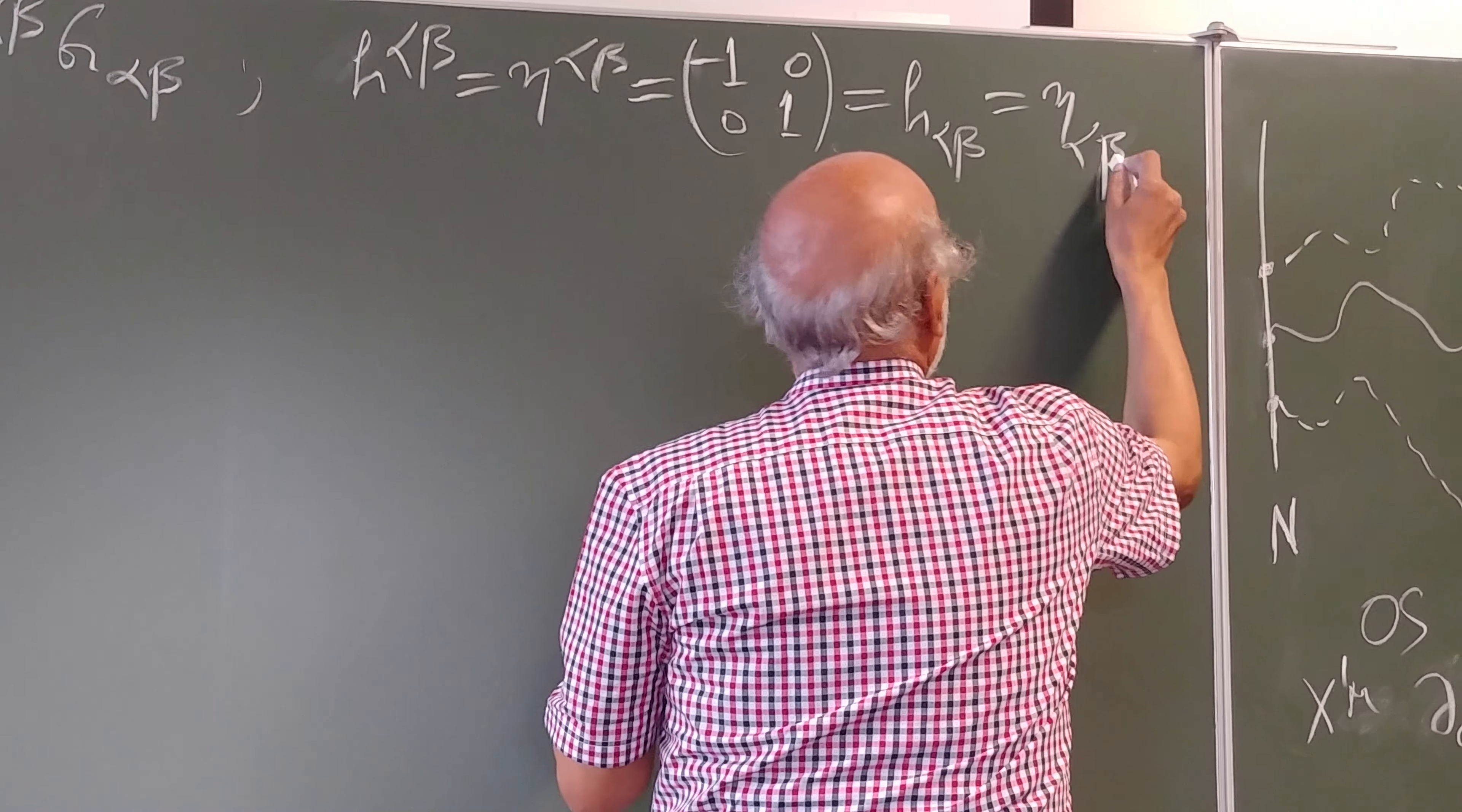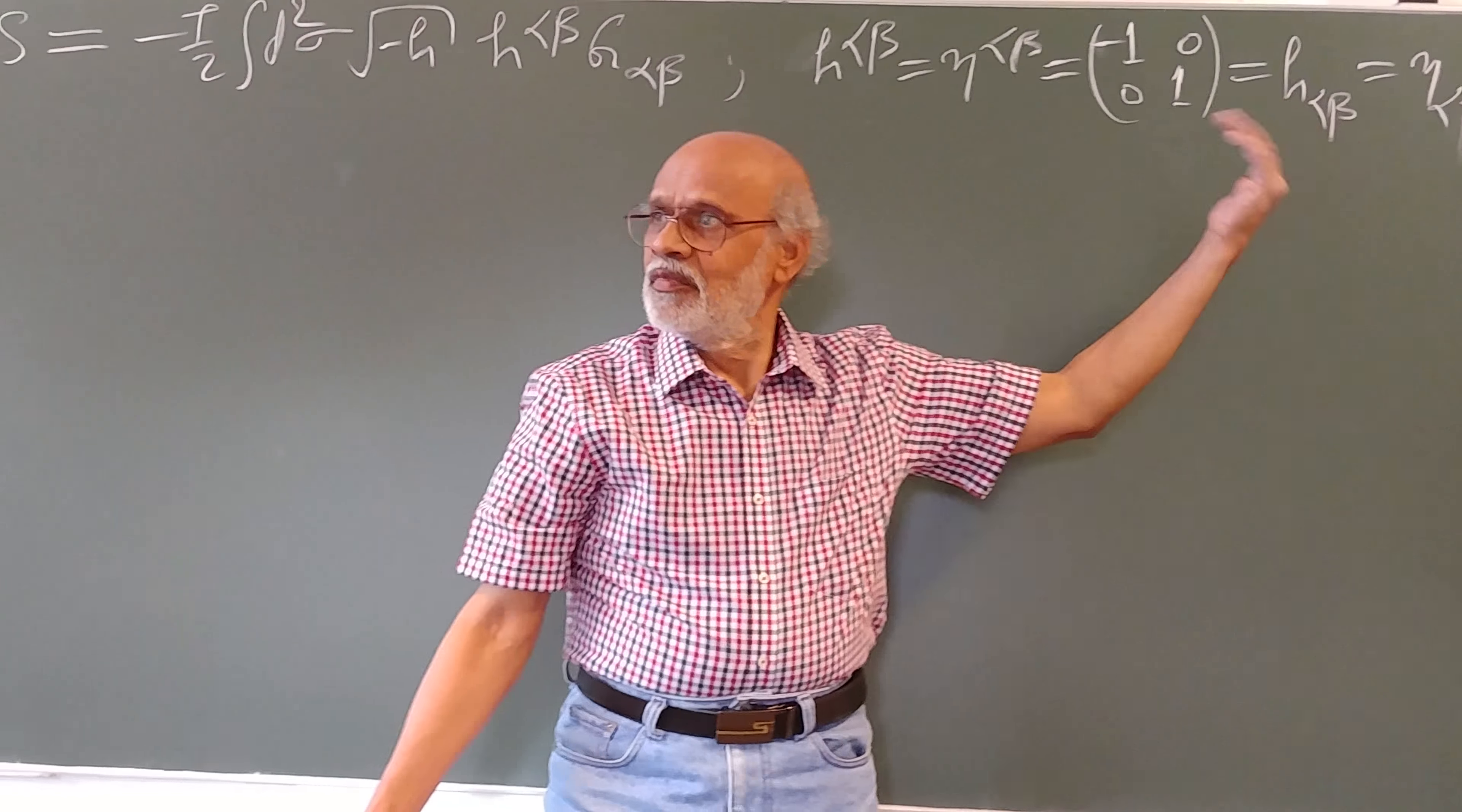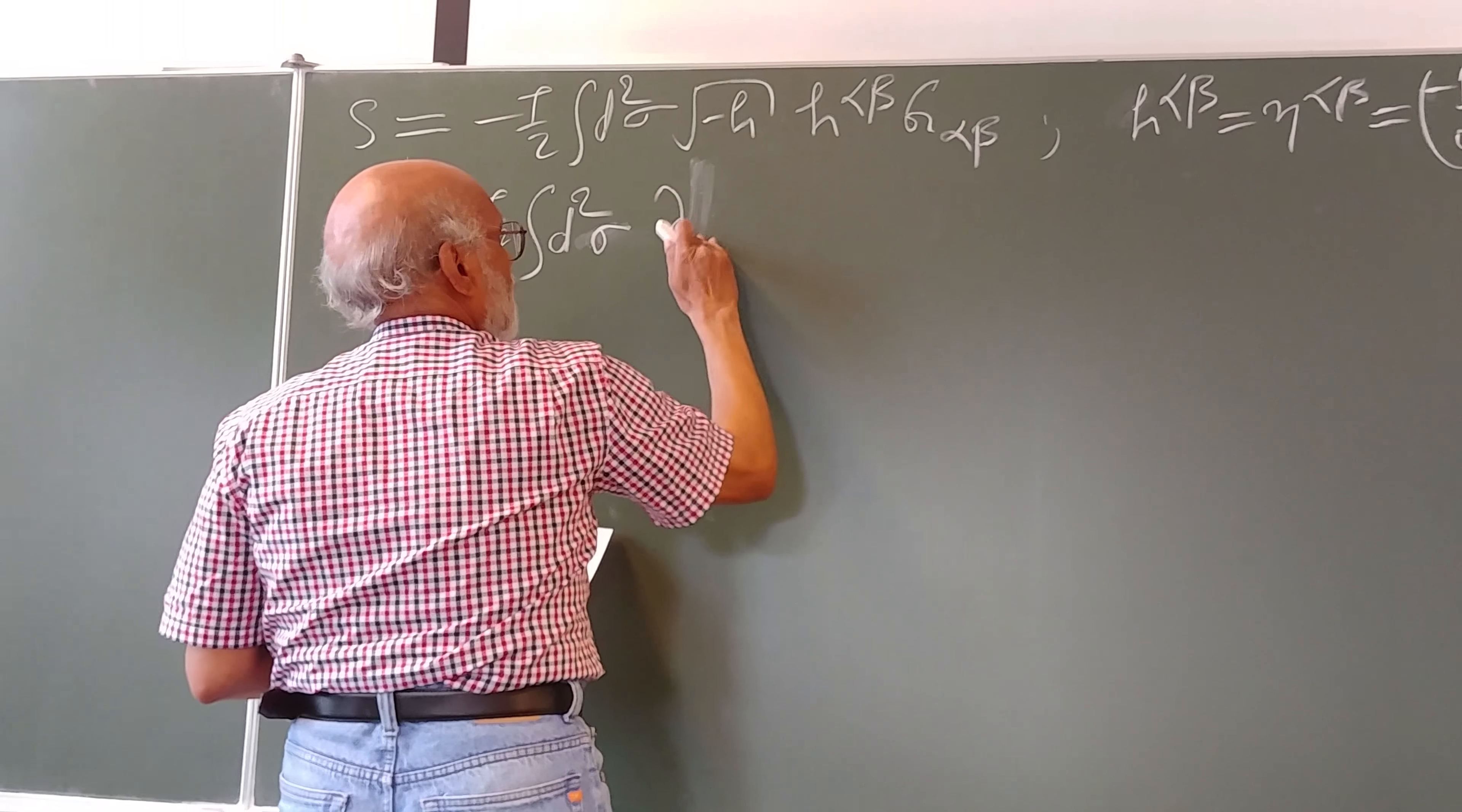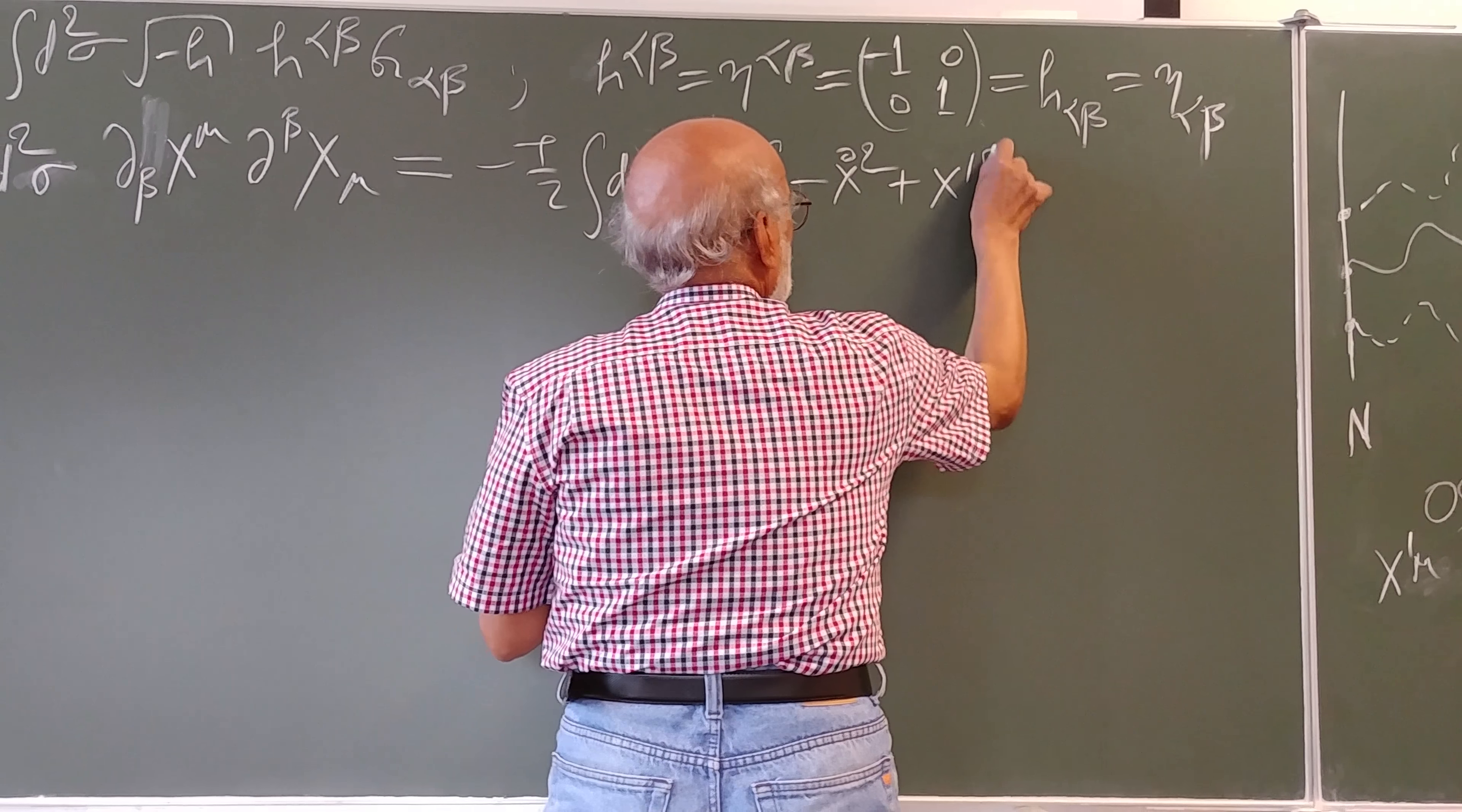because the inverse of this matrix is the same as the matrix itself. So, the inverse of this matrix is the same. This is the inverse of this. But, because of a particular value of this matrix, its inverse remains the same as the matrix itself. And so, this is the inverse of this matrix and this is mu and this is equal to d tau d sigma into